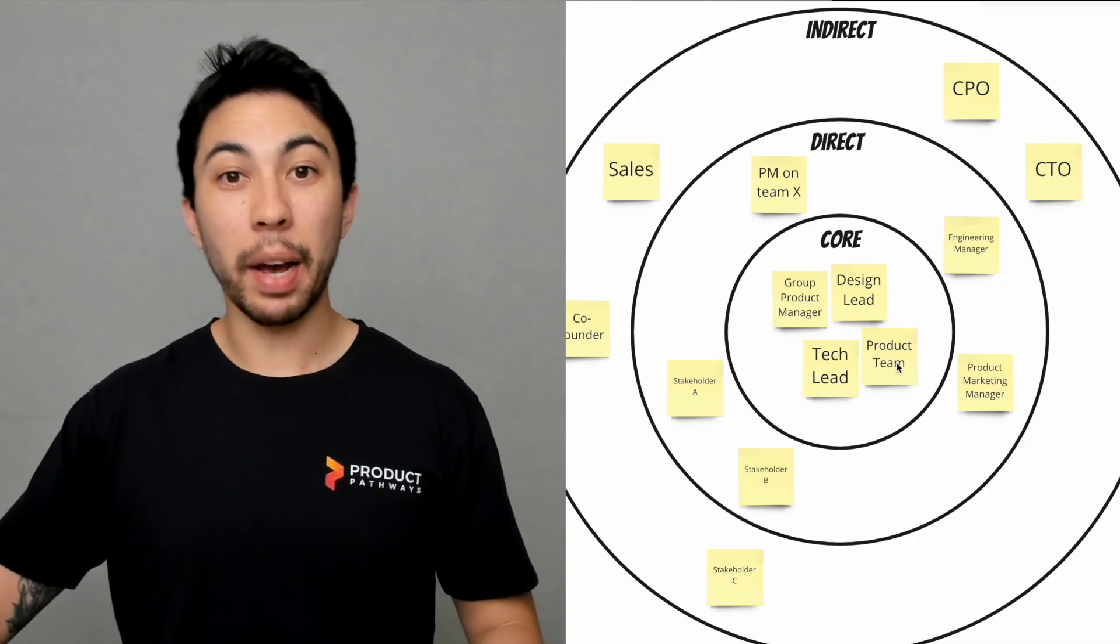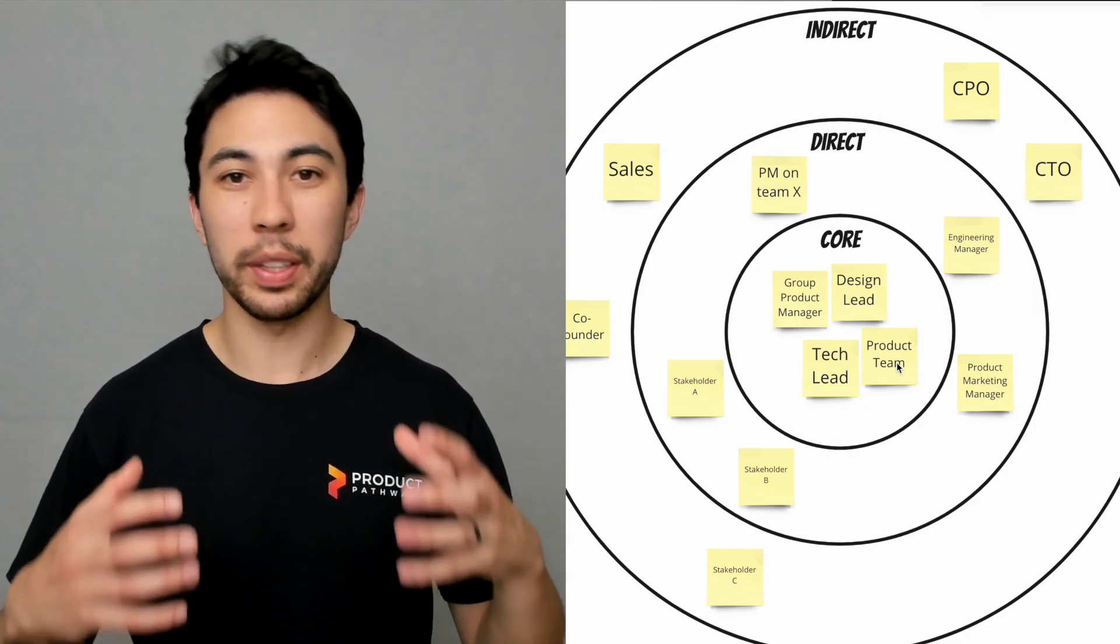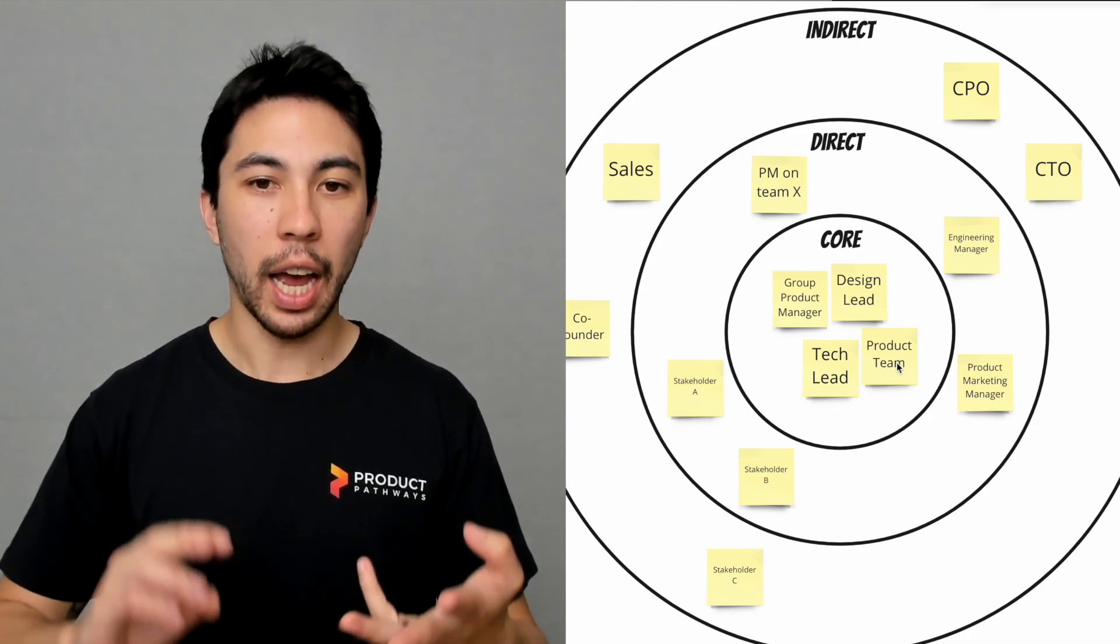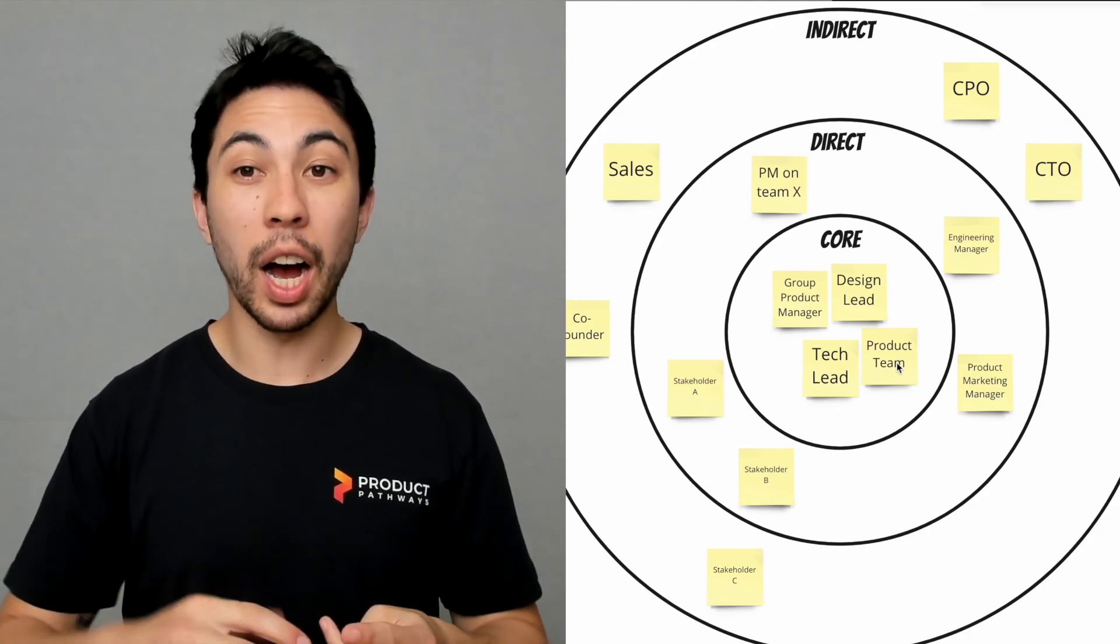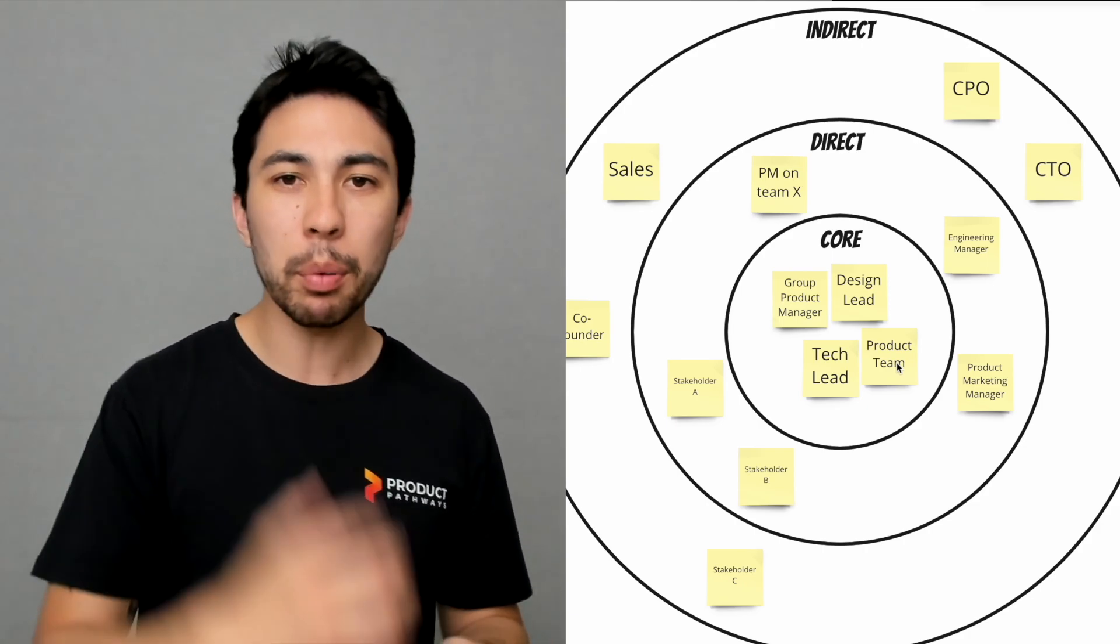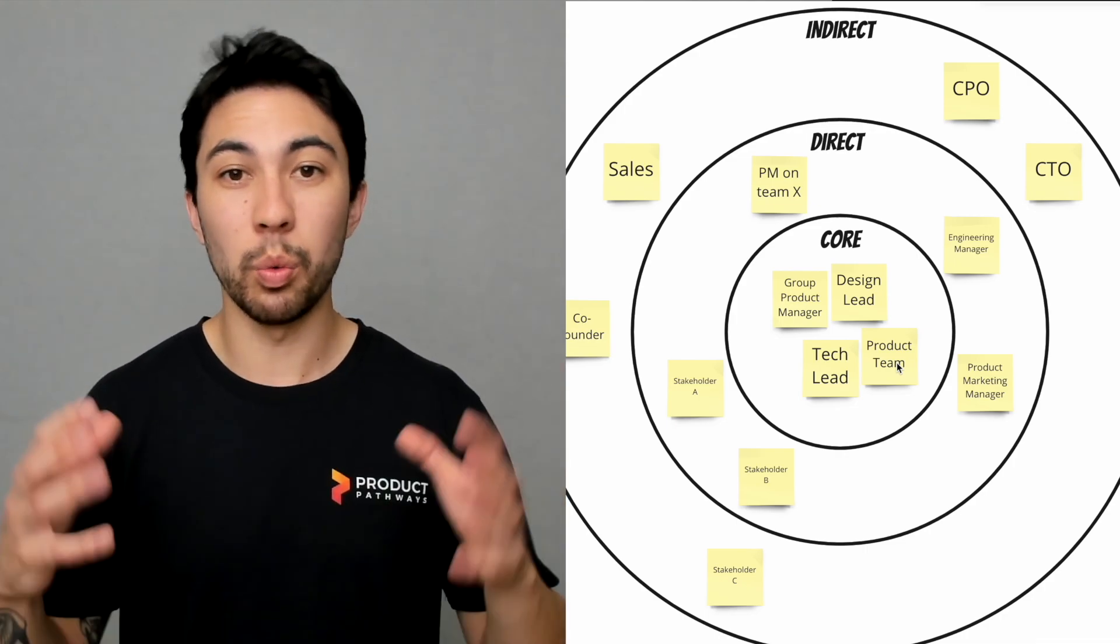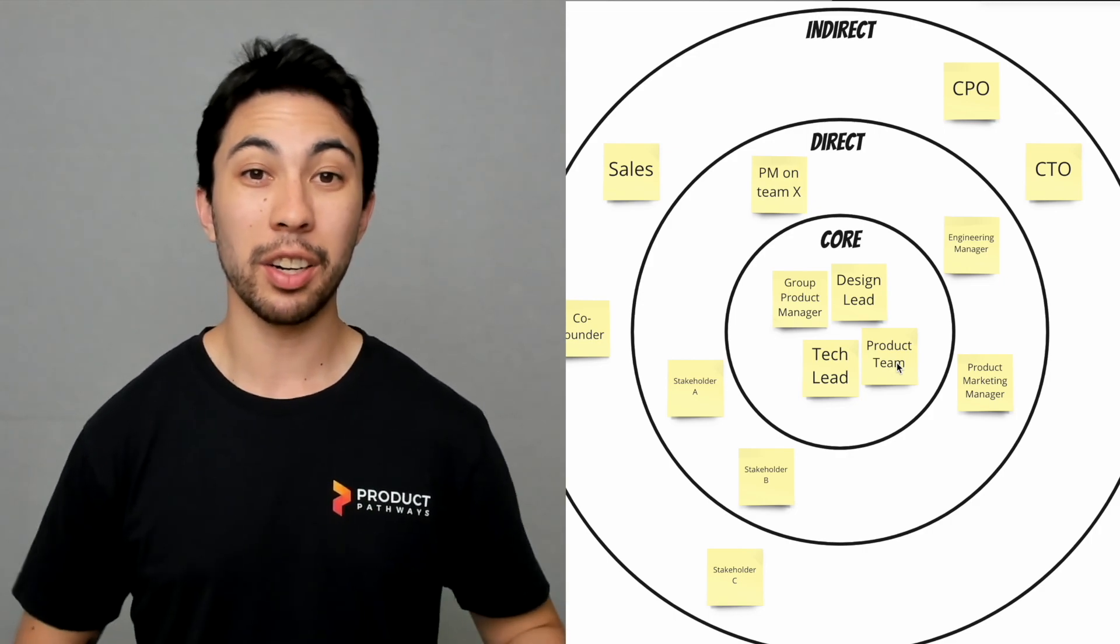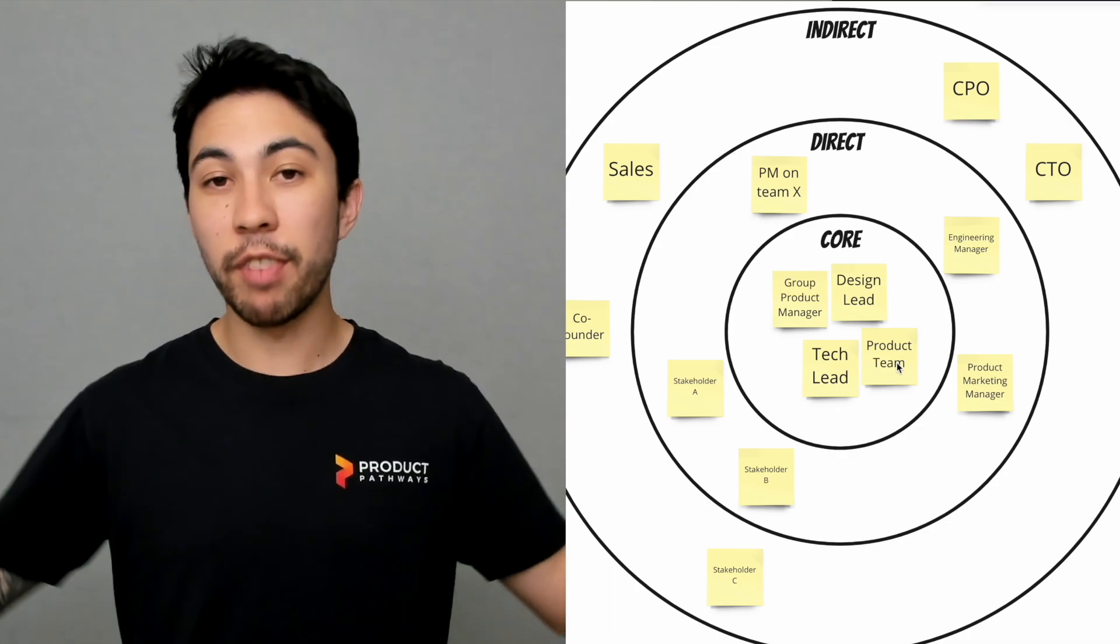So working back through it: the core—this is their life, this is their day-to-day, this is what they worry about. They're involved in decisions, they're involved in the day-to-day work. Direct are people who are involved day-to-day; they probably collaborate with you, collaborate on some decisions, but this isn't their sole world. This isn't the only thing that they focus on. They have a direct impact and a direct interest, but this isn't what they do all the time.